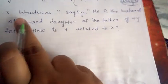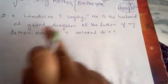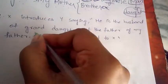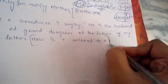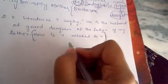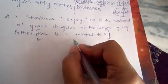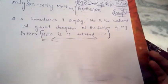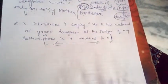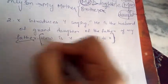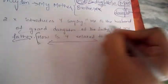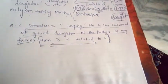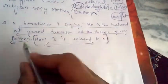Let's look at another example. X introduces Y saying: 'He is the husband of the granddaughter of the father of my father.' How is Y related to X? As usual, this is the final question. We don't concentrate on it directly — instead, we start studying the question in the backward direction to get the solution in minimum time.